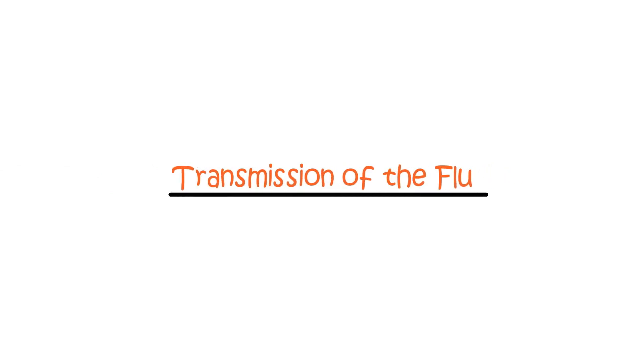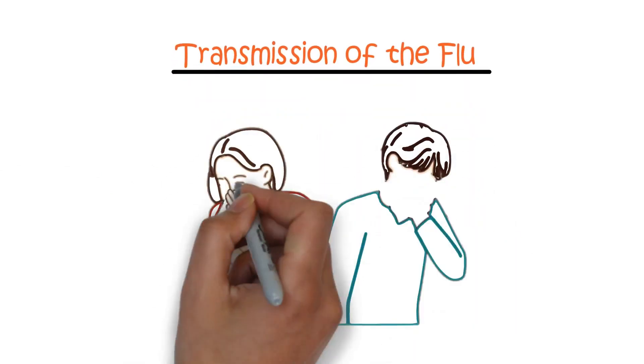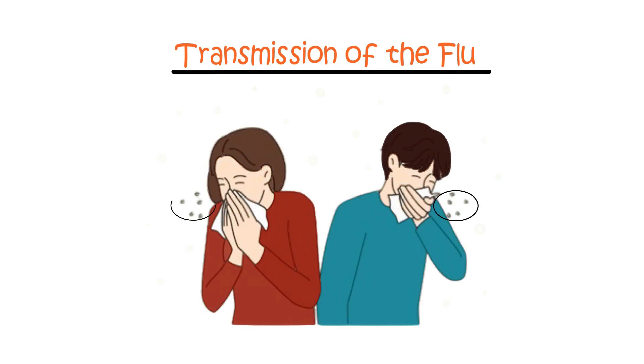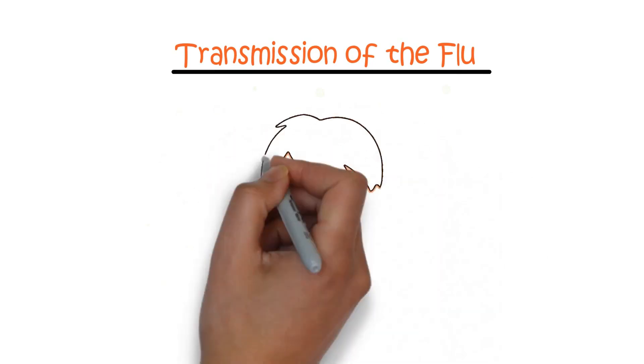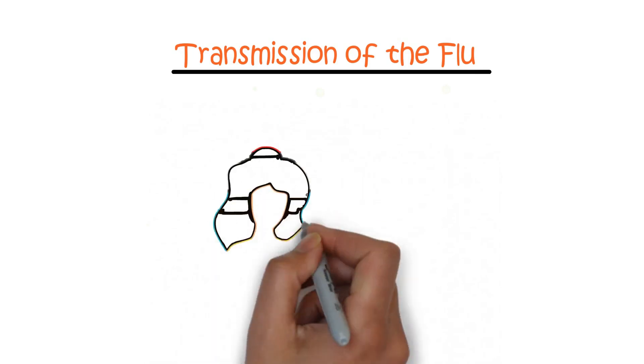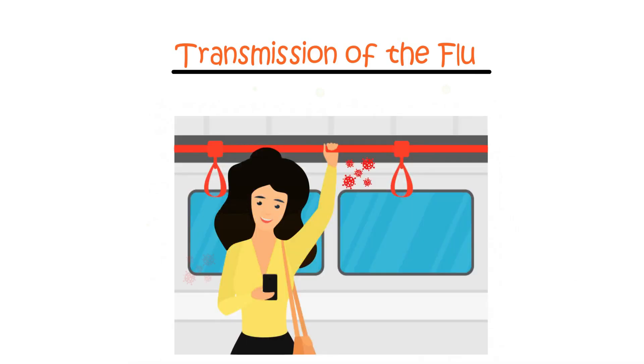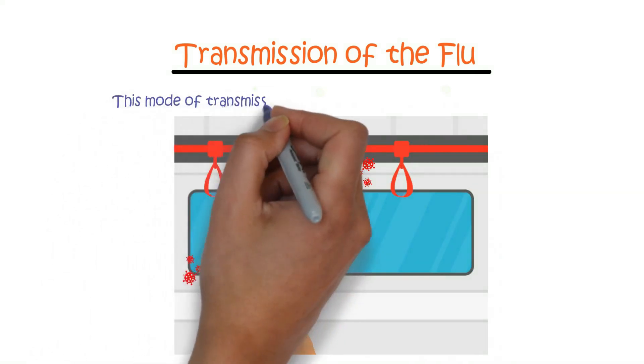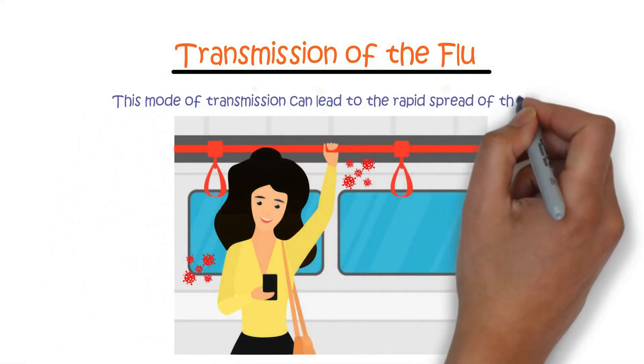Transmission of the flu. The flu spreads from one person to another through respiratory droplets generated when an infected individual sneezes or coughs. Additionally, you can contract the virus by coming into contact with surfaces contaminated by the influenza virus. This mode of transmission can lead to the rapid spread of the flu.